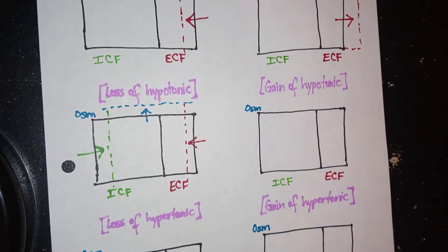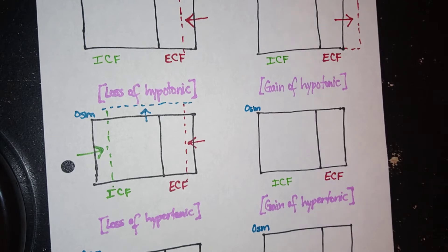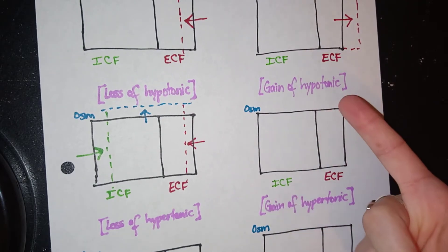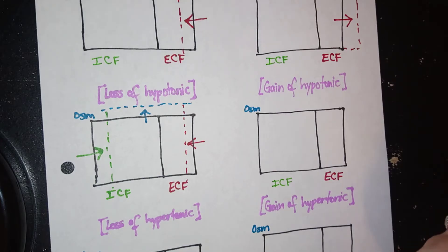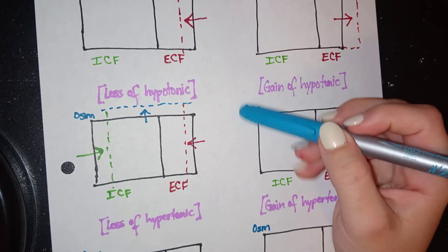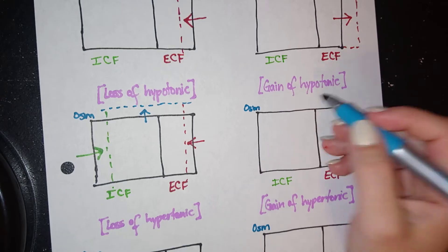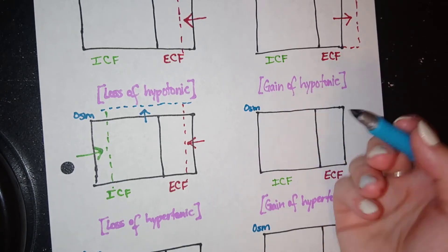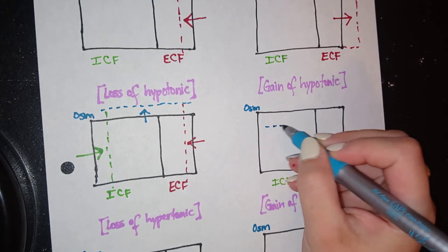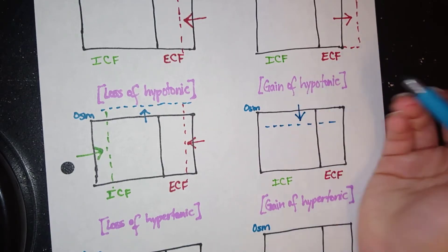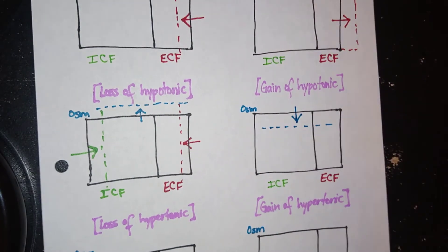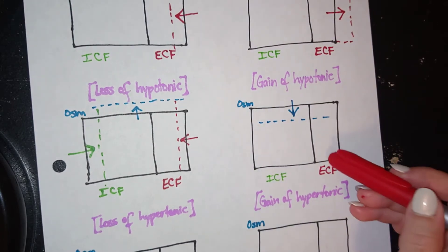Now, let's practice a similar one, but with gain of hypotonic fluid. So I'm gaining water. So it could be something as simple as just drinking too much water or giving a hypotonic saline. So step one, we're going to be looking at osmolarity. Now, my osmolarity here will have to be low because I'm giving so much water that it's diluting all that salt, right? So I'm going to go ahead and draw this lower.